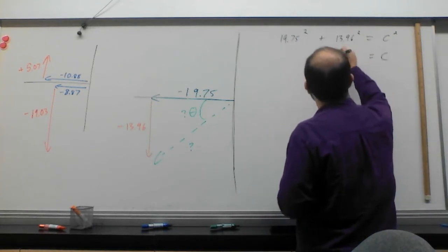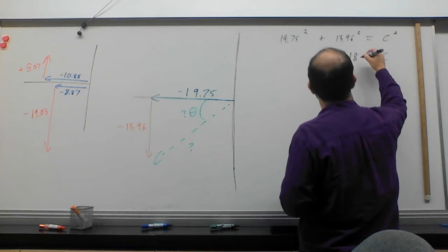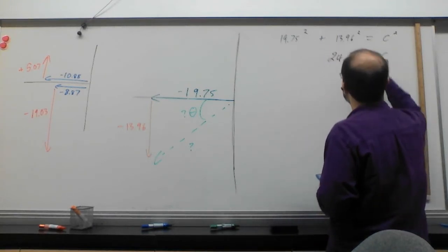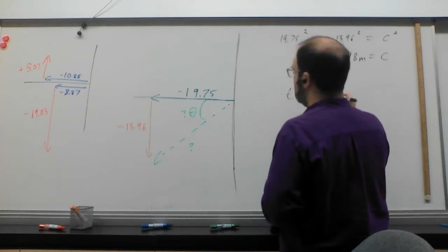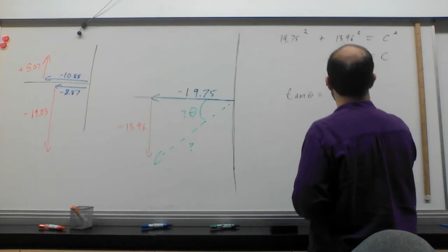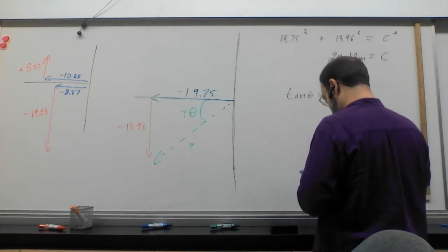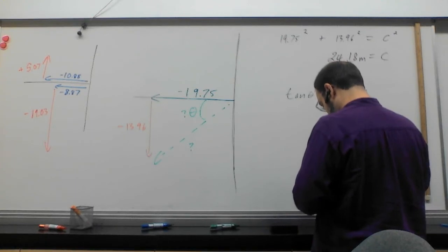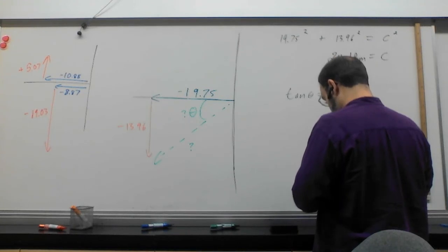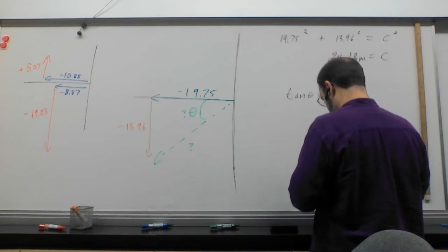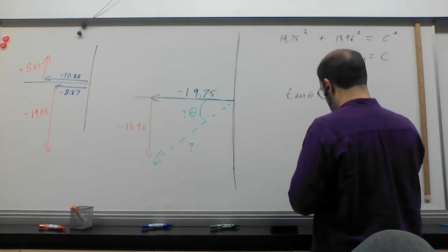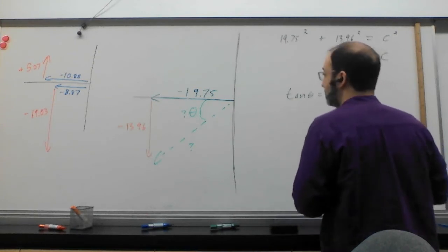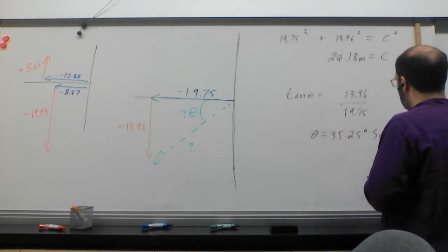And I'm going to get that C here is going to be 24.18 meters. Then I do the tangent. Tan theta equals 13.96 divided by 19.75. We're going to get theta equals 35.25 degrees south of west.